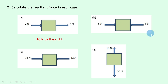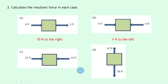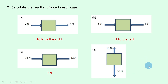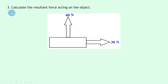Subtracting five newtons from the six newtons we end up with one newton to the left. For part c we've got 12 newtons to the right and 12 newtons to the left — they cancel each other out to give a resultant force of zero newtons. Lastly, part d we've got 16 newtons upwards but 30 newtons downwards, so subtracting 16 from 30 gives us a resultant force of 14 newtons downwards.